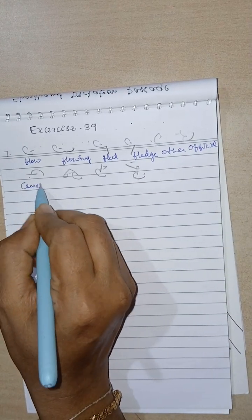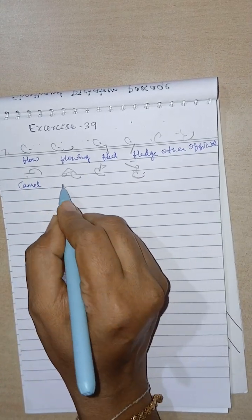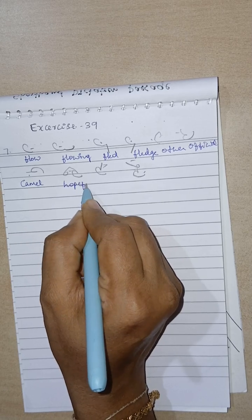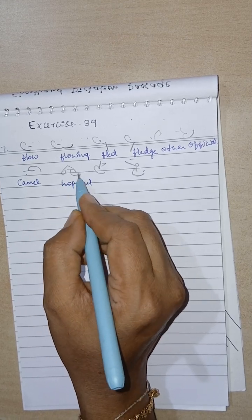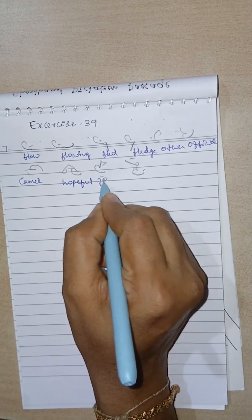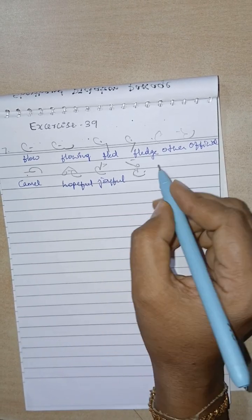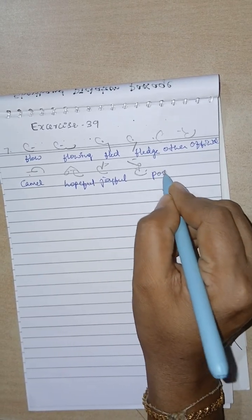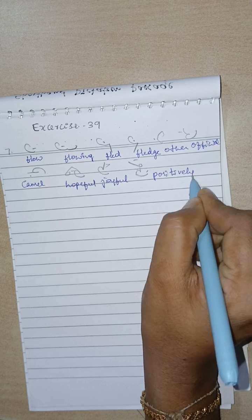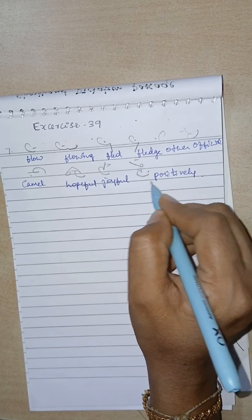Camel. K-M-L. Hopeful. H-P-F-L. Joyful. J-F-L. Positively. P-Circle-S-T-1.